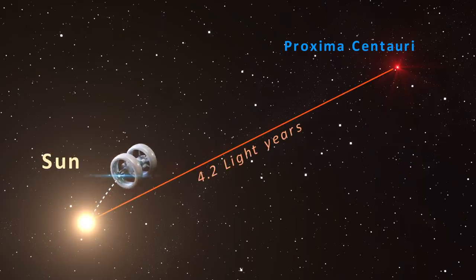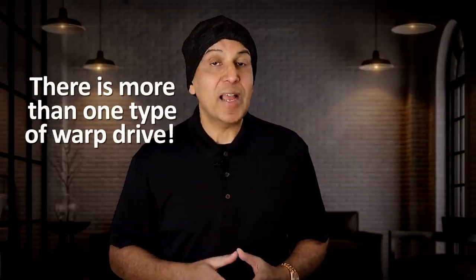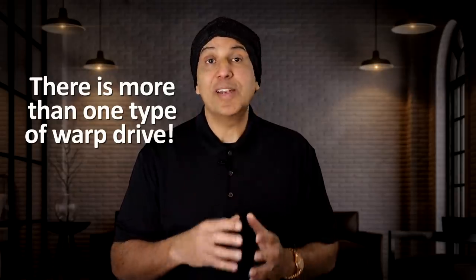But, as we learned, no ship can physically travel faster than the speed of light because there's no superluminal matter. The Alcubierre warp drive is science, but it's also fiction. What Bobrick and Martyr figured out is that there's more than one way to skin a cat. There is more than one type of warp drive.